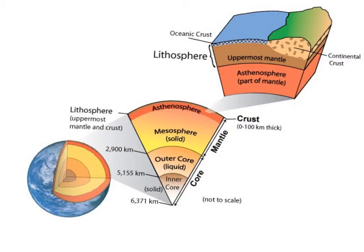This allows our plates to move on top of this layer. The uppermost part of the mantle is very similar to the crust, and that's the lithosphere. We have two different types of lithosphere crust: oceanic crust and continental crust.